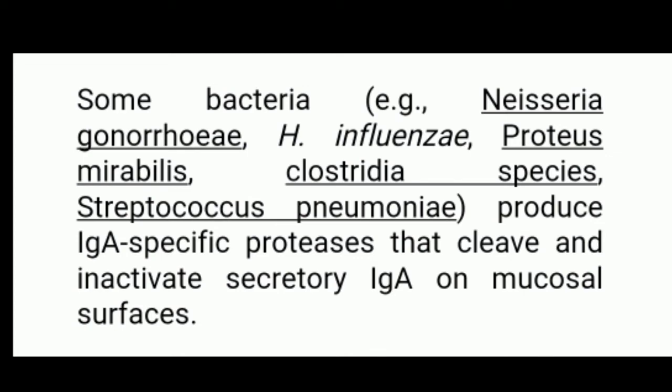Some bacteria, for example Neisseria gonorrhoeae and Haemophilus influenzae, produce a special enzyme protease which can break down the antibody Immunoglobulin A (IgA), inactivating it. So the antibody can be rendered inactive, allowing spread.